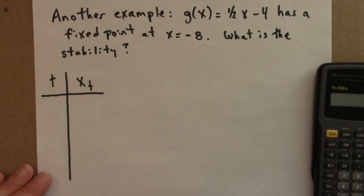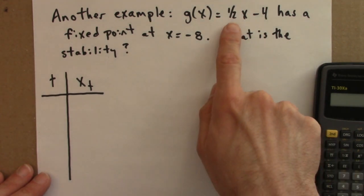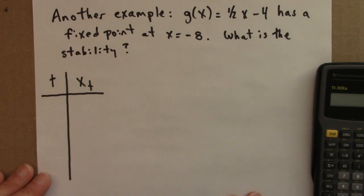To illustrate the idea of stability, let's do another example. The function g of x equals a half x minus 4 has a fixed point at minus 8.